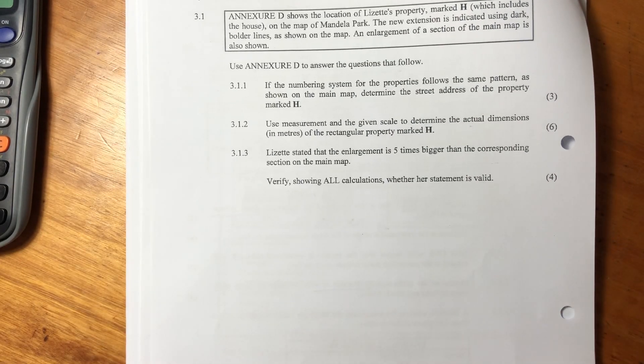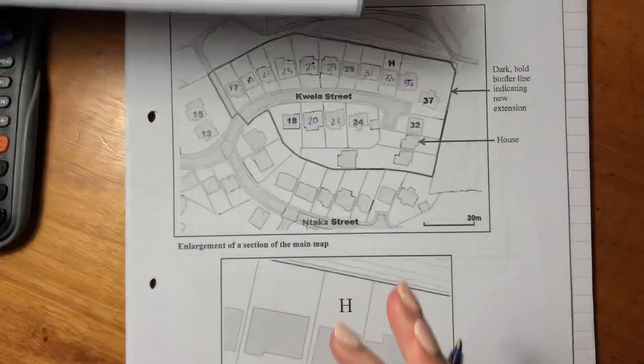It says use the measurements and the given scale to determine the actual dimensions in meters of the rectangular property, the property not just the house, marked H. So let's do this. It's always good to get a ruler when you're doing these questions. My ruler is very broken, but it will do the job.